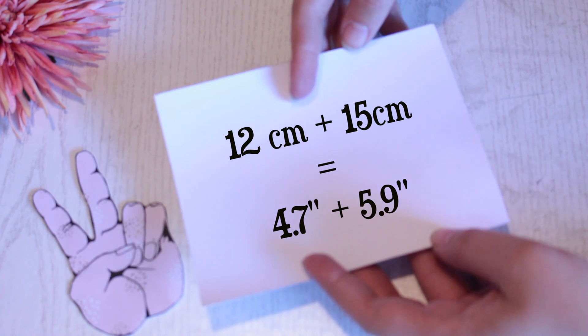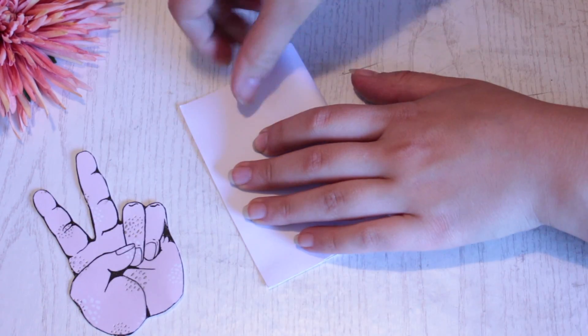Then cut out a piece of construction paper with the measurements right on the screen. Then fold it in half.